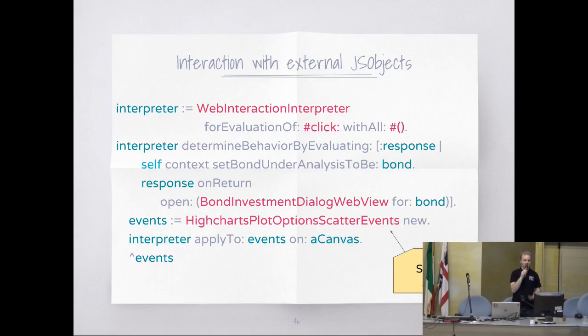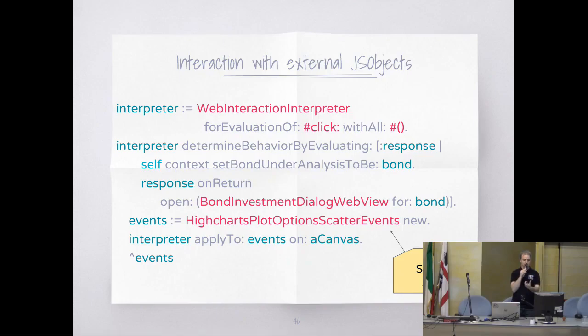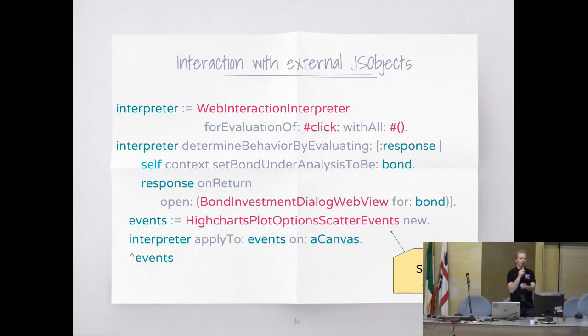Even if the framework doesn't have a Willow integration in place, we can do it more or less by hand. I say: create me a web interaction interpreter for the click. Then you configure the interpreter for what you will do with the trigger — I can say render, evaluate, anything we can do with the standard on trigger. In that case, I want to run an analysis on this thing, and when the response is back, open the diagram.